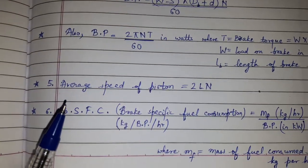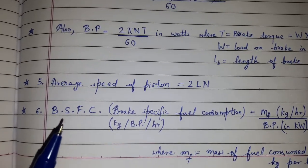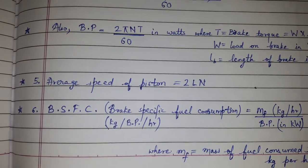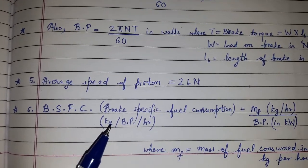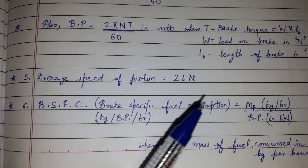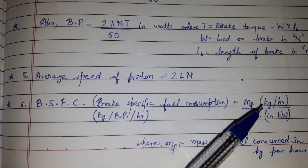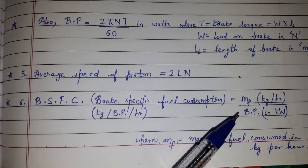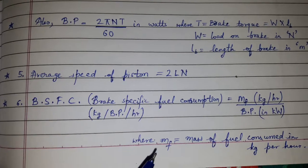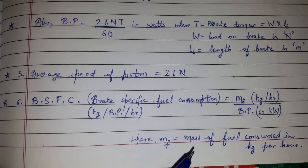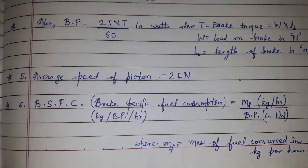Fifth, average speed of piston is equal to L × N. BSFC which is brake specific fuel consumption and the unit is kg per BP per hour which is equal to Mf (unit is kg per hour) upon BP whose unit is in kilowatt, where Mf equal to mass of the fuel consumed in kg per hour.